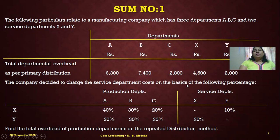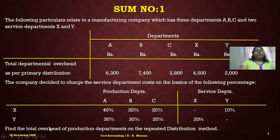The company decided to charge the service department cost on the basis of the following percentages. X serves other departments: A at 40%, B at 30%, C at 20%, and Y at 10%. Y serves other departments: A at 30%, B at 30%, C at 20%, and X at 20%. The question asks us to find the total overhead of production departments using the repeated distribution method.